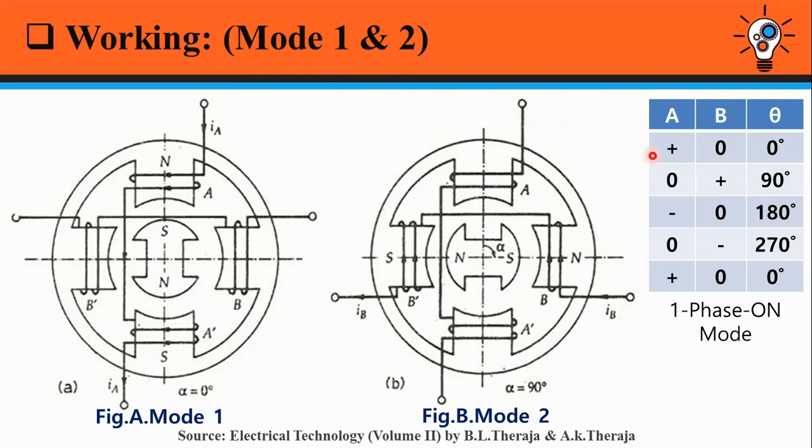During mode 1, phase A is excited with positive current and phase B is not excited. At this interval, current I flows from A towards A', due to which north and south poles are created on the stator poles.